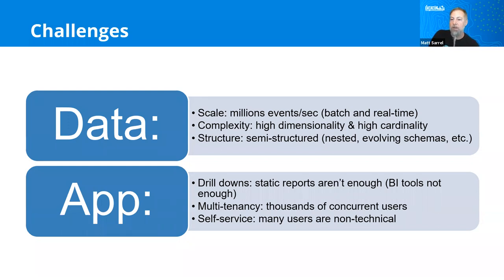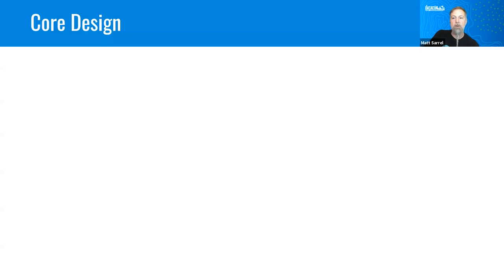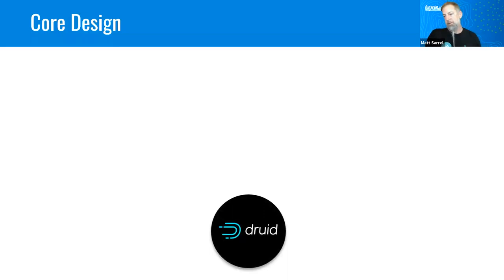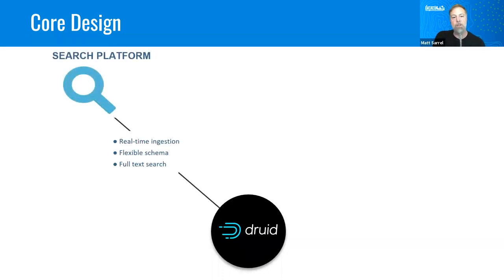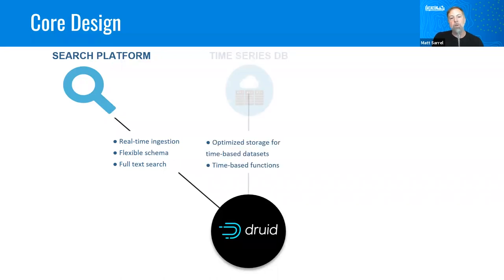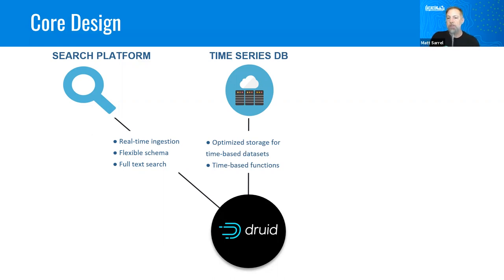It's high-dimensionality and high-cardinality data, and in that case it was semi-structured. What they wanted to enable was this drill-down, fluid, slice-and-dice kind of reporting with thousands of users. Since Druid's been open-sourced, a whole bunch of companies have built very high-scale, high-performance environments. Druid takes the best of the search platform — this idea of real-time ingestion, a flexible schema, and the ability to do full-text search — though it's really not a search platform.